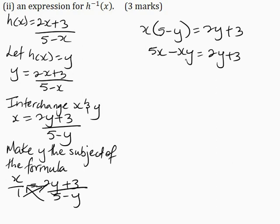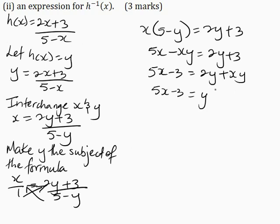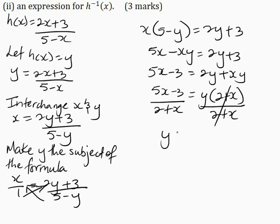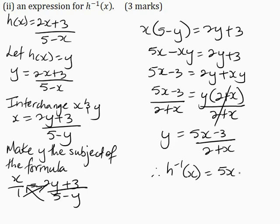Now I want to take minus xy to the right-hand side and take positive 3 to the left-hand side. This becomes 5x minus 3 is equal to 2y plus xy. So 5x minus 3 is equal to y factorized as y times 2 plus x. Dividing both sides by 2 plus x, this cancels, so y is equal to 5x minus 3 all over 2 plus x. Therefore, h inverse of x is equal to 5x minus 3 all over x plus 2.